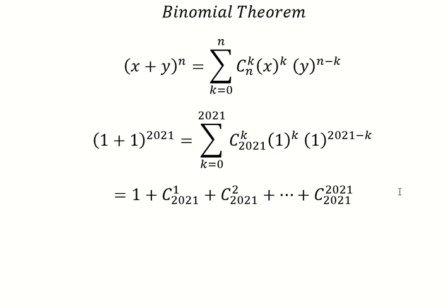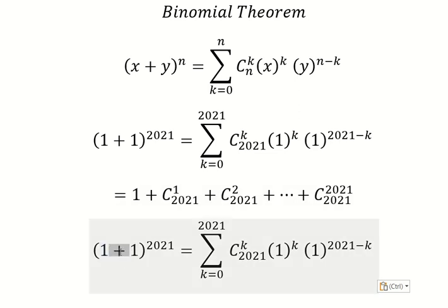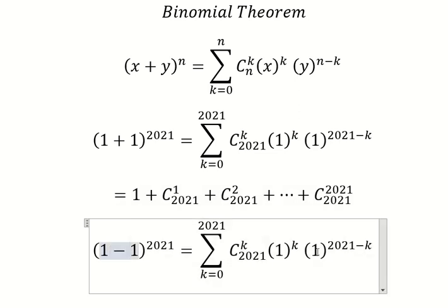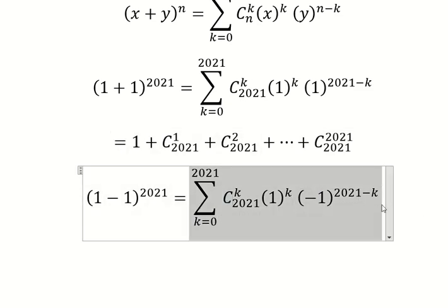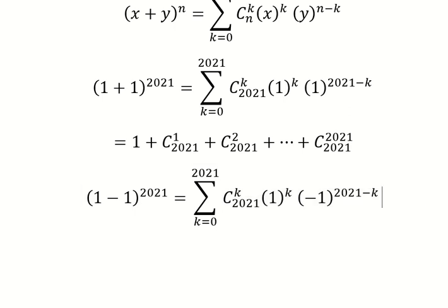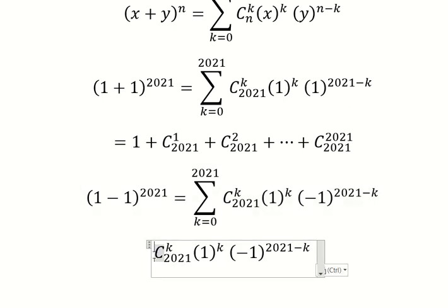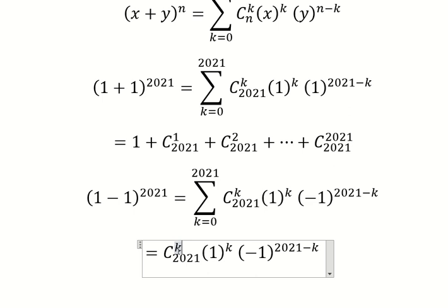Now I will change to the negative sign. So this means s equals negative 1. If I put k equals to 0 in here, we have 1 for this one, and we have 1 for this one.